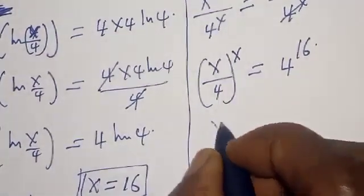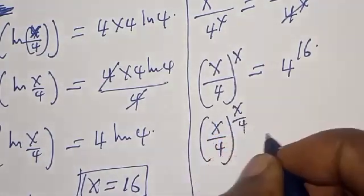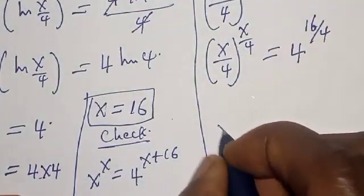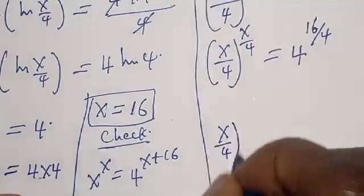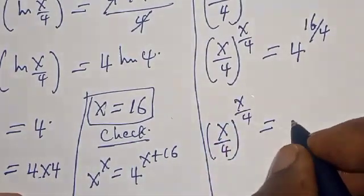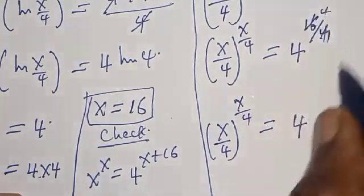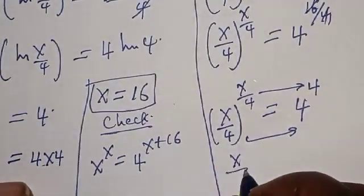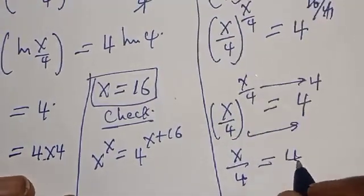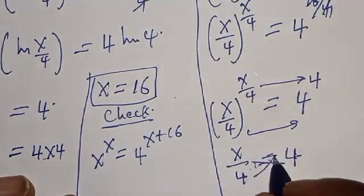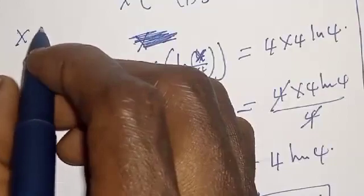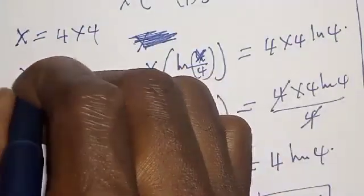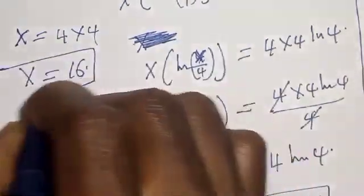Now we have s over 4, all raised to power s, is equal to 4 raised to power 16. By comparing both sides, we can see s over 4 equals 4 and s equals 16. Cross multiplying: s is equal to 4 times 4, therefore s is equal to 16. That is the final answer for the second method.